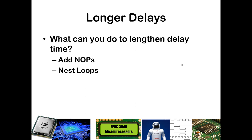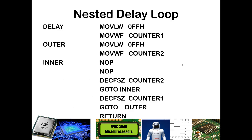To lengthen the delay time, we could add NOPs and also add nested loops — calling an interior loop within the exterior loop. Here is an example of a nested loop delay. We load 0xFF into W, move that into counter 1 as our outer loop counter. Within the outer loop, we load another 0xFF into counter 2 for the inner loop. Inside the inner loop we have two NOPs and keep decrementing counter 2 and going back to inner, until counter 2 gets back to 0 each time. Then we decrement counter 1, go back to the outer loop, reload counter 2 every time, until counter 1 gets all the way to 0.